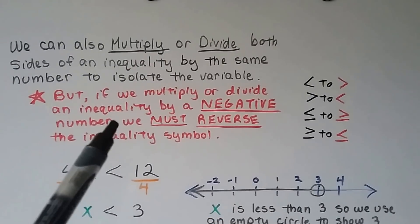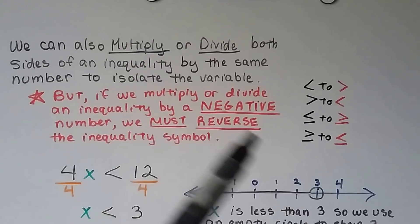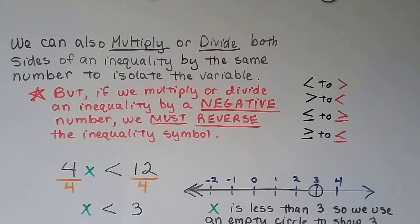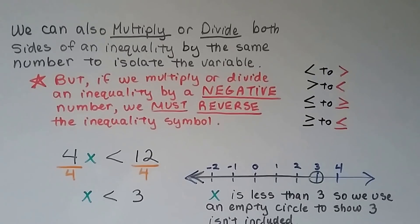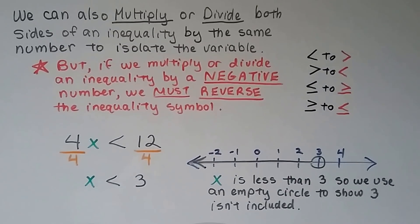So any time we're multiplying or dividing by a negative, we have to remember to flip that sign. Otherwise, it won't be true. So I'll show you an example in a second. Let's do this one first.